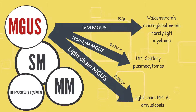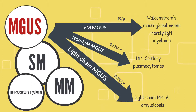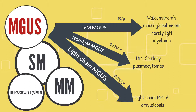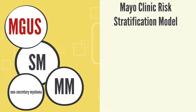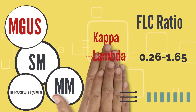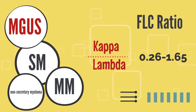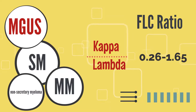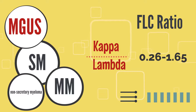Non-IgM MGUS progresses at the rate of 0.5% a year into multiple myeloma and plasmacytomas. Light chain MGUS progresses at the rate of 0.3% a year into light chain multiple myeloma and AL light chain amyloidosis. A low-risk MGUS is characterized by M-protein levels of less than 1.5 grams per deciliter, an IgG isotype, and a normal free light chain ratio. The free light chain ratio is calculated by taking the ratio of kappa subtype proteins over lambda subtype proteins in the blood. If this ratio falls between 0.26 to 1.65, the risk of progression of MGUS is considered to be low.